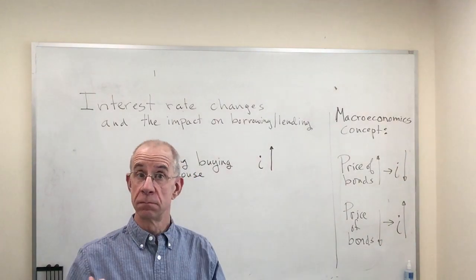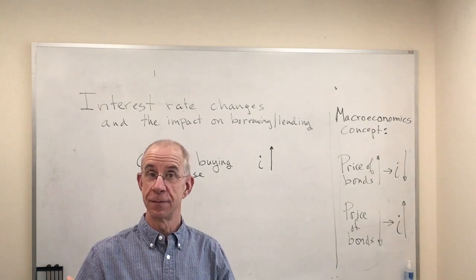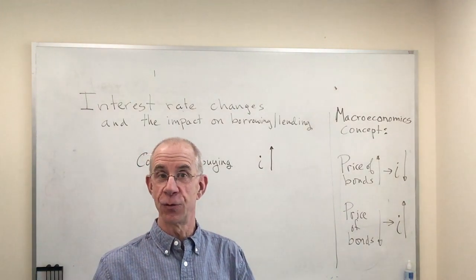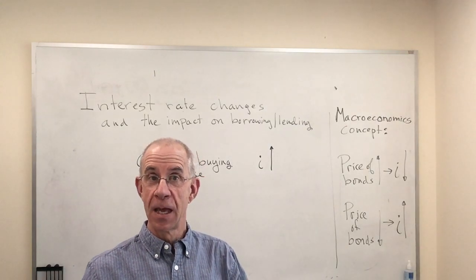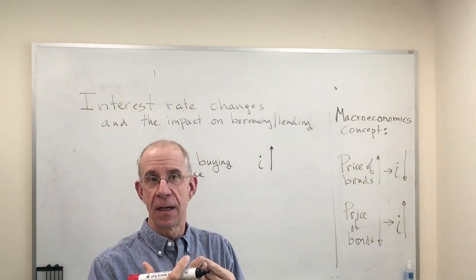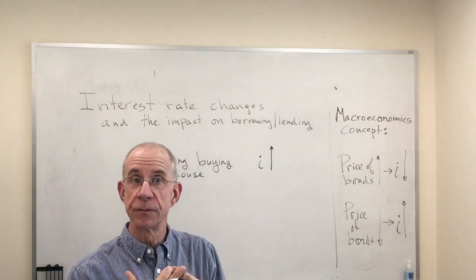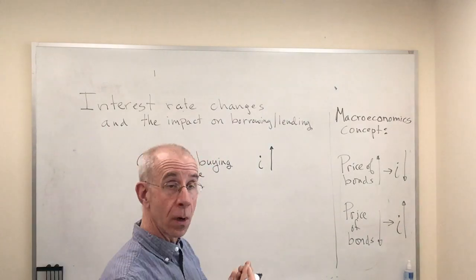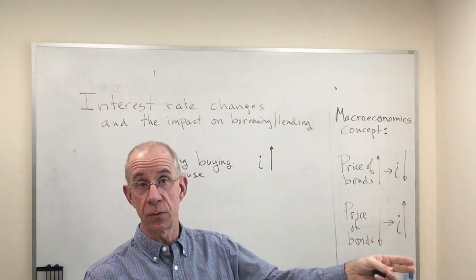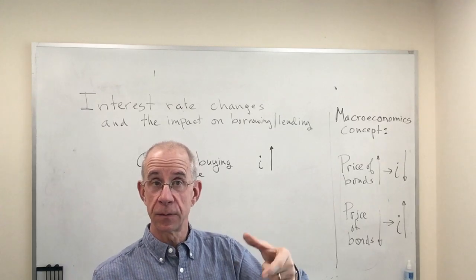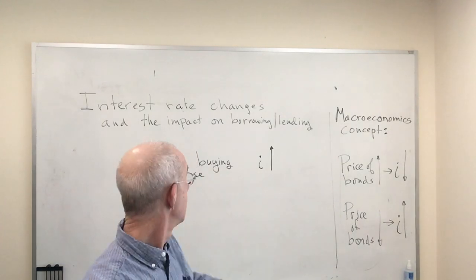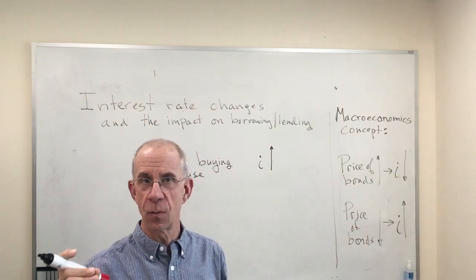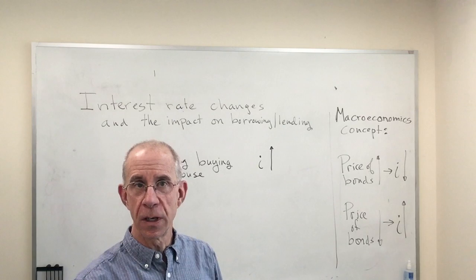By the same token, interest rates going up is a way to potentially encourage a bank to lend more. That interest rate is really the price of borrowed funds — it's the interaction between the supply and demand for people that either want to get money to undertake some activity, to buy a house, to expand a business, or whatever. The interest rate is the thing that will help match the borrower to the lender.